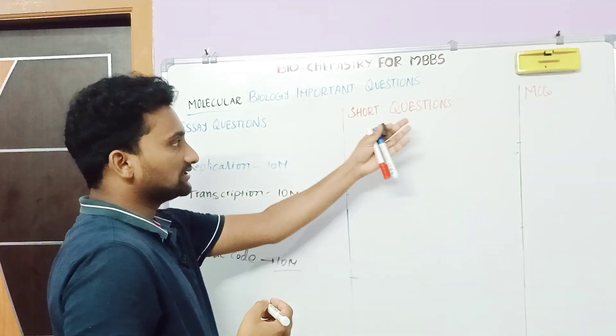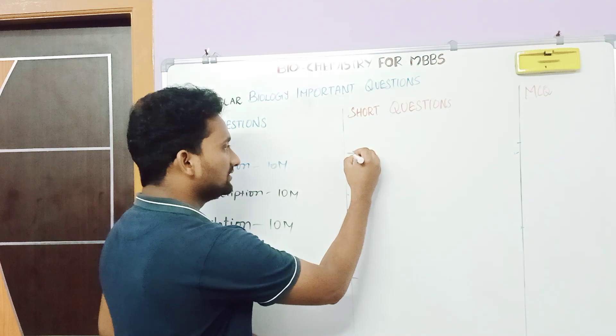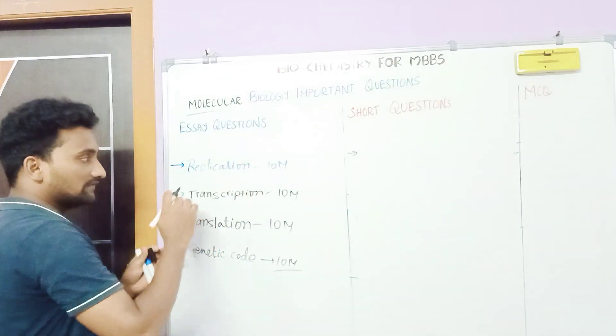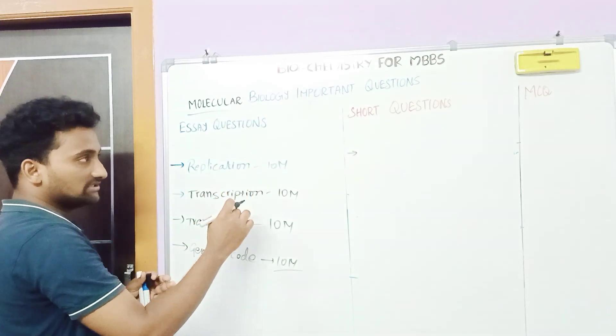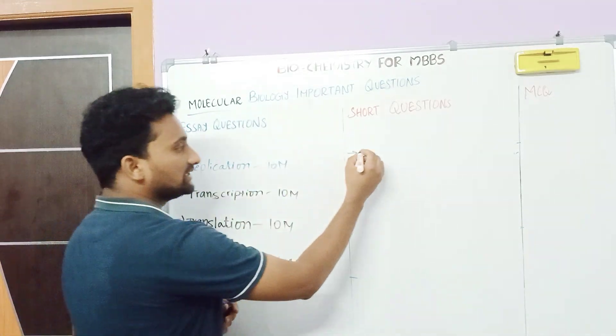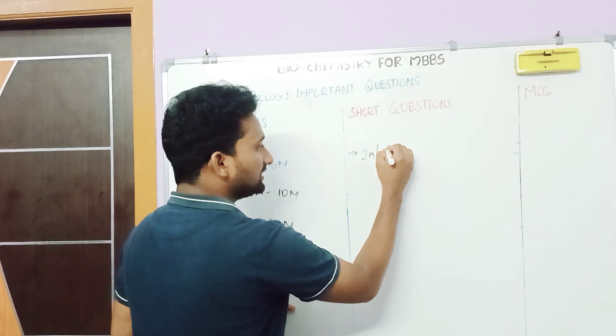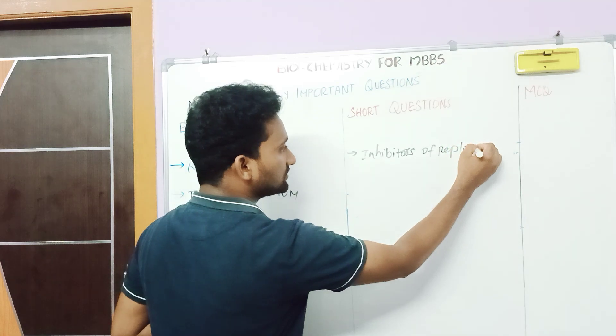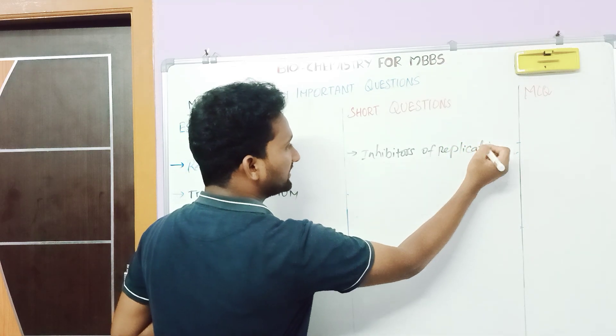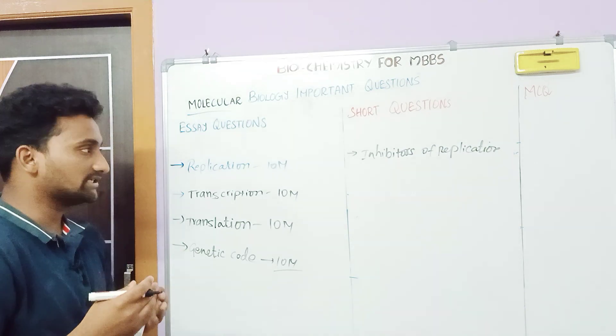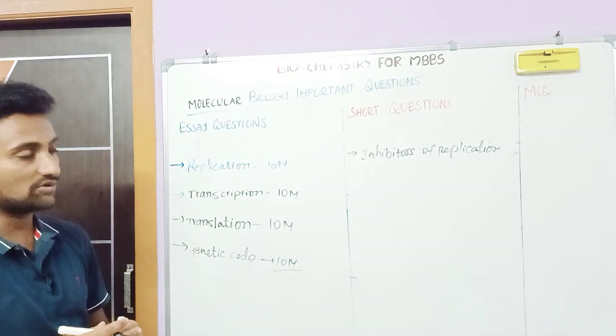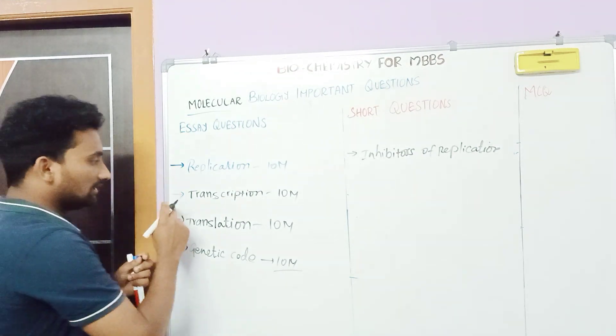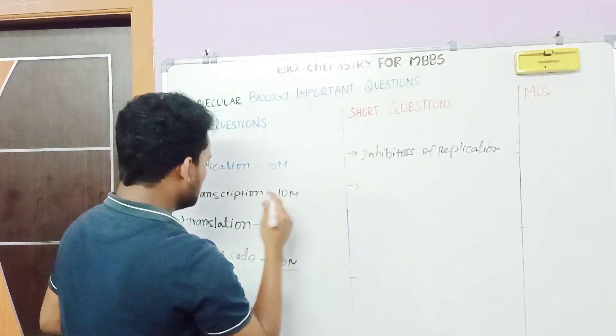So when it comes to short answer questions, you can see here, the first one: replication, right. Here in essay questions, if you study replication in essay questions, like the sub-question of replication is inhibitors of replication. So you also read inhibitors of replication. Sometimes what happens is inhibitors of replication is a sub-question, and the replication question will be asked in short questions.